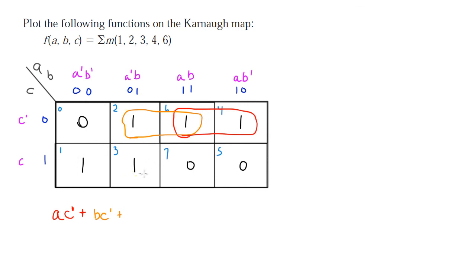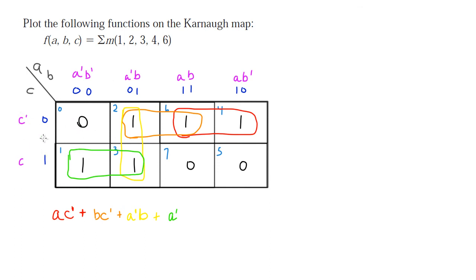For the next group, taking these two together: you'll notice it overlaps the C=0 and C=1 rows, so C is excluded. Looking at A, both values are A', and B stays the same, so this gives us A'B. For the last group, A is A' for both cells and B changes so B is excluded, but it's in the C=1 row, so we get A'C. That takes care of all the 1s.